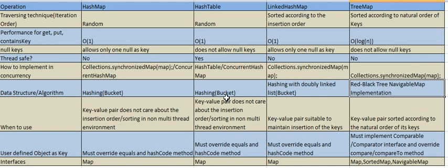Regarding concurrency: if you are in a multi-threaded environment and want to use HashMap, it is better to use either Collections.synchronizedMap, or for better granularity at the multi-threading level, use ConcurrentHashMap. HashTable by default is thread-safe, meaning only one thread can access it at a time, but if you want finer granularity of multi-threading then use ConcurrentHashMap. For LinkedHashMap, you can use Collections.synchronizedMap to make it thread-safe.